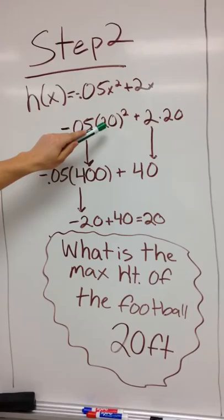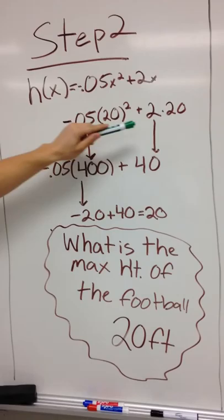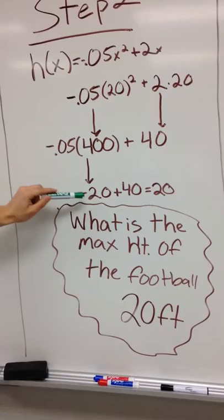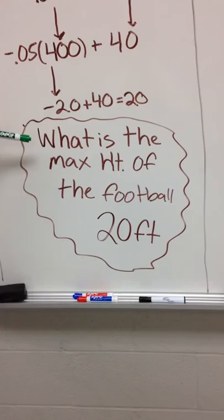Over here you take 20 times 2, which equals 40. The 0.05 comes down with it. Multiply that out and it equals -20. Bring this 40 down, and -20 plus 40 equals 20. That is the max height of the football: 20 feet.